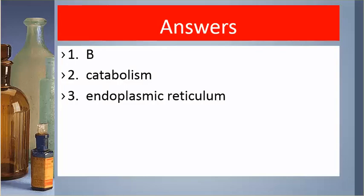Answers. Number one is B. Number two is catabolism. Number three is endoplasmic reticulum.